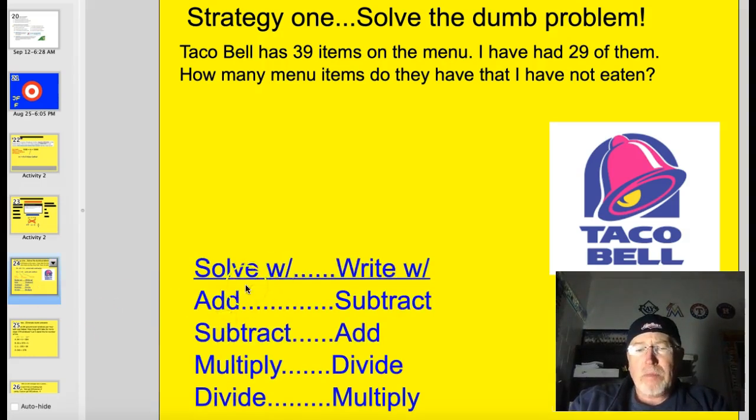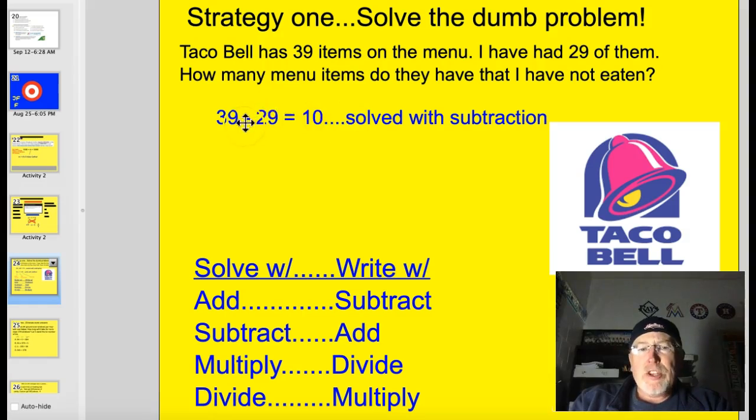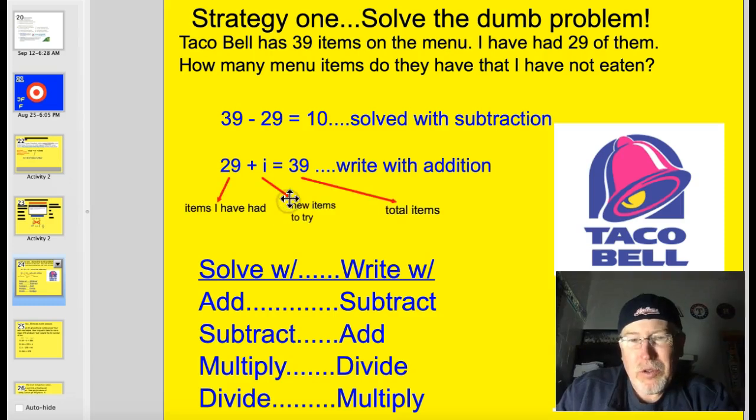However, if you solve the problem with addition, you write it with subtraction. If you solve it with subtraction, you write an equation with addition. If you solve it with multiplication, you write a division equation. If you solve it with division, you write a multiplication equation. 39 minus 29 is what I did. I subtracted, right? So I'm going to write the equation with addition. I just use the opposite operation. So here's the 29 I started with. I'm going to eat I more items, and then I'll have 39. You can also label these things. Here's the number of items I've had, the items I need to try, and here are the total items. The labeling is probably the most important part of being successful on this.